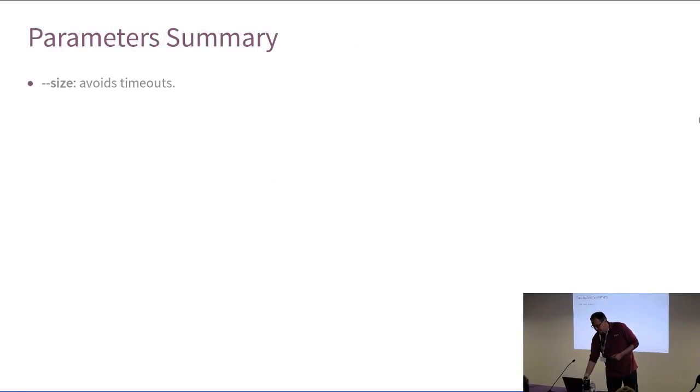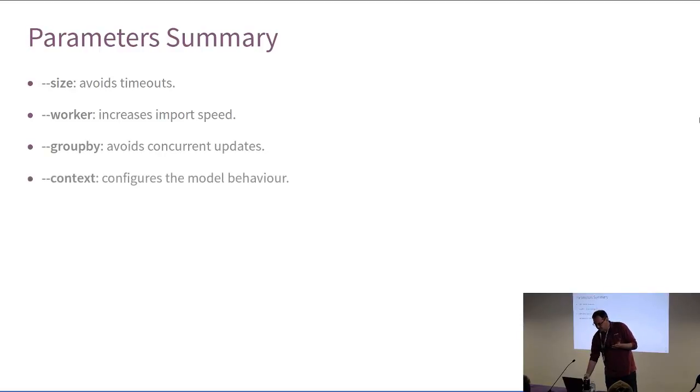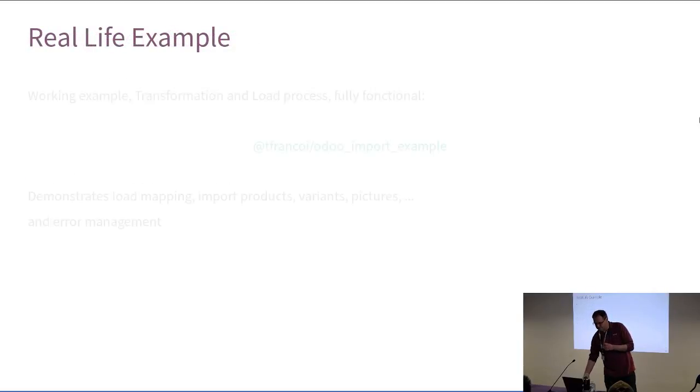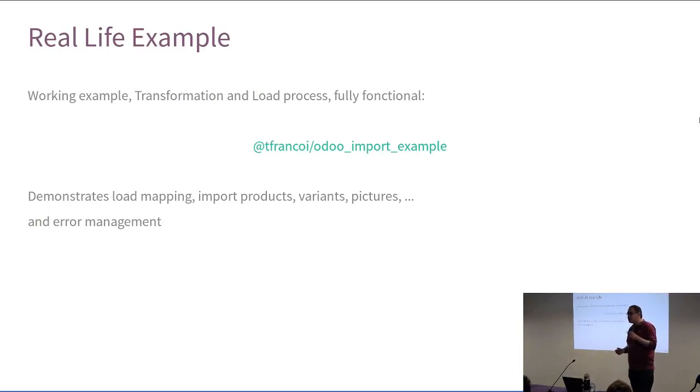So, we have seen the most important parameters. The --size to avoid the timeouts. The worker to increase the speed. The group-by to avoid concurrent updates. The context to configure some model behavior. And the o2m to import one-to-many relationships. So, if you are really interested in... Here was just a teasing. But I would strongly suggest you to take a look at the odoo_import_example repository of Thibault Francois. You will have a deep understanding of how things work. And also how we can fully automate an import with the error management also. Very interesting. I strongly suggest you to take a look at this. It's a real example. It's not a demo that works. It's a real example that works.